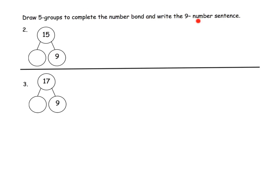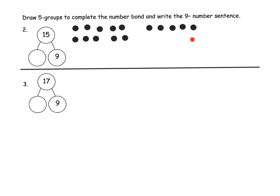When I read these directions, I thought: what is a nine number sentence? It says draw five groups to complete the number bond. Let's take a look at the first question. We're going to draw 15: 1, 2, 3, 4, 5, 6, 7, 8, 9, 10, 11, 12, 13, 14, 15. I arranged it as a 10-frame plus the extra — that's how I like it — rather than Eureka's one big long line, since we'll be doing 10-frames in the future.